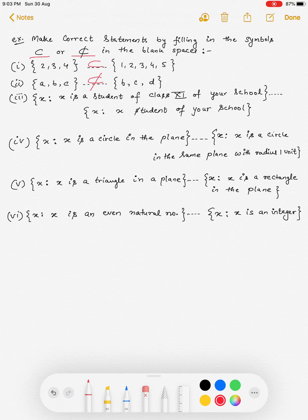अब 3rd one में, X is a student of class 11 of your school and दूसरा है, X is a student of your school. तो student of your school के अंदर तो सारे बच्चे आ गए, 11th के भी आ गए, तो this is a subset or proper subset.